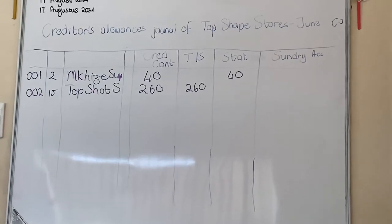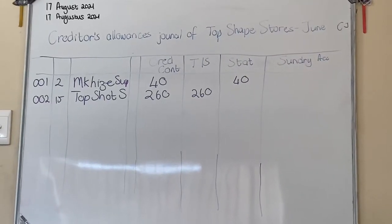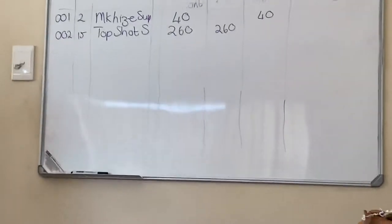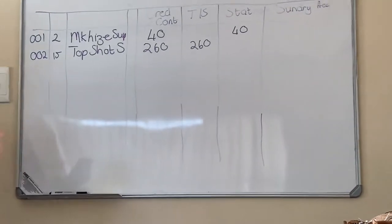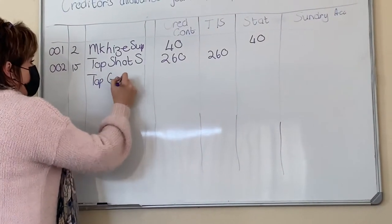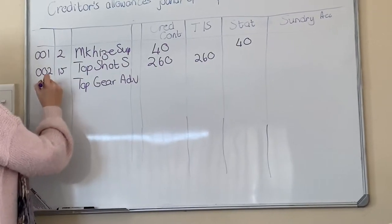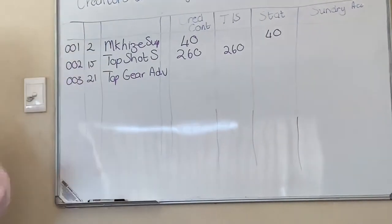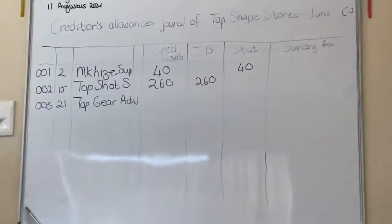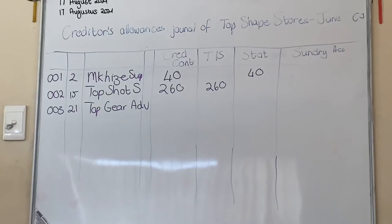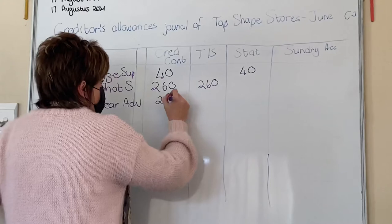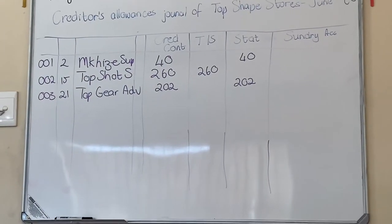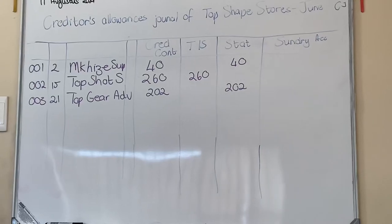On the 21st, Top Gear Advertisers overcharged us on our last purchase of literature by 202 rand, so they made a mistake on the invoice. We tell them listen, we owe you less, so we send a debit note to Top Gear Advertisers - debit note 003, it happens on the 21st. This is literature, so you can see that as stationery. The amount they overcharged us by is 202 rand and it goes into your stationery column.